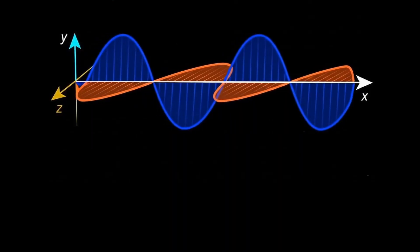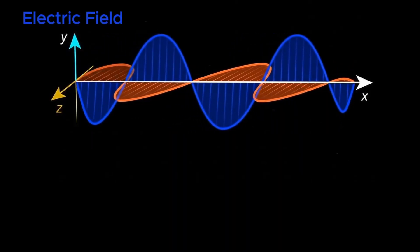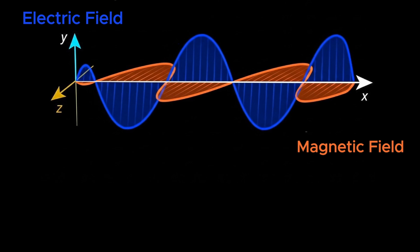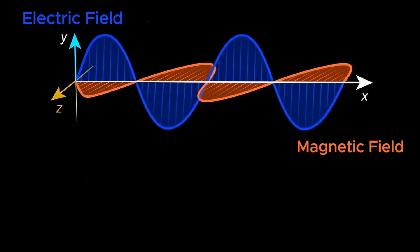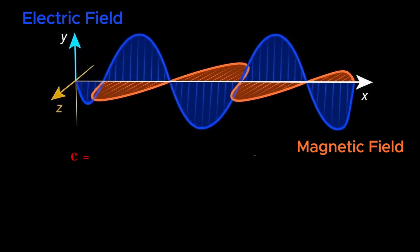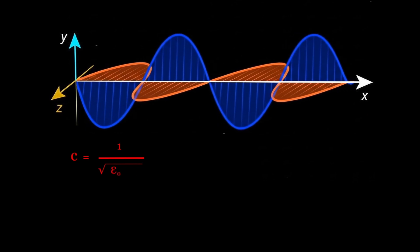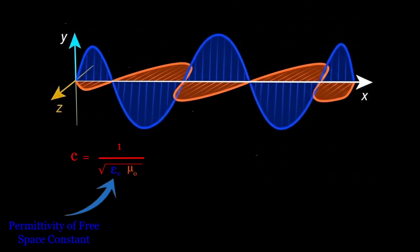But this isn't a fair race at all because light and sound are fundamentally two different types of waves. Light is an electromagnetic wave created by oscillating electric and magnetic fields. Its speed in a vacuum is a universal constant determined by the fundamental constants of electricity and magnetism.